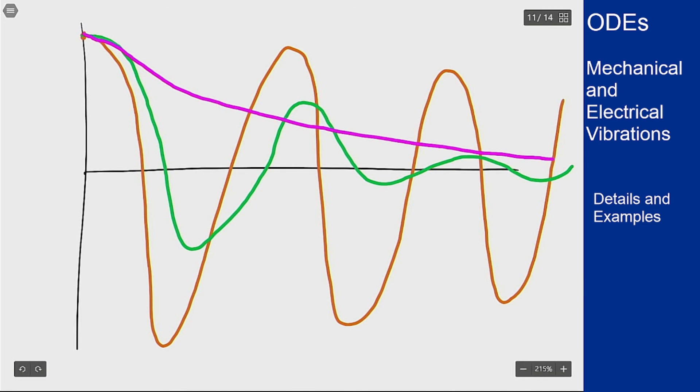You're looking at the oscillation with very little decay for the air, the oscillation with more decay for the water, and the no oscillation and slow decay for the honey.